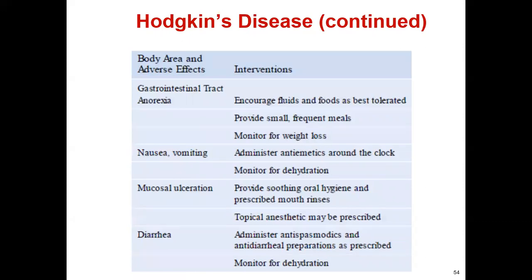For patients with anorexia, nausea, and vomiting, encourage fluid and food intake at the best-tolerated level, provide small frequent meals, and monitor for weight loss. If nausea and vomiting occur, administer antiemetics around the clock and monitor for dehydration. If the patient has diarrhea, administer antispasmodic and antidiarrheal preparations, and also monitor for dehydration.